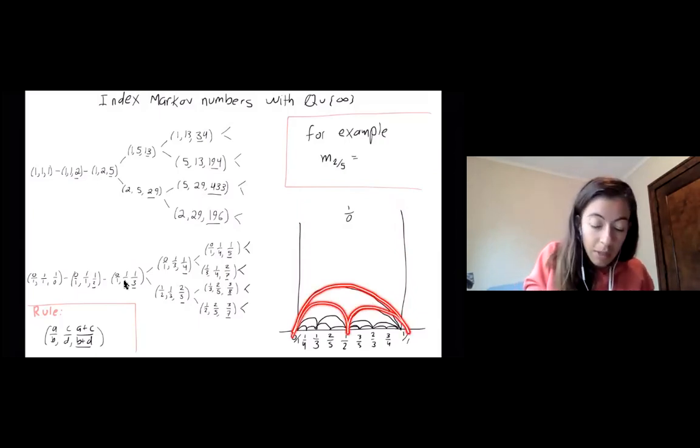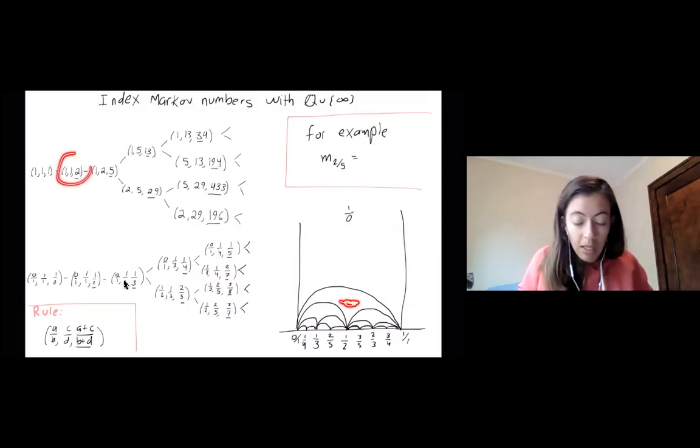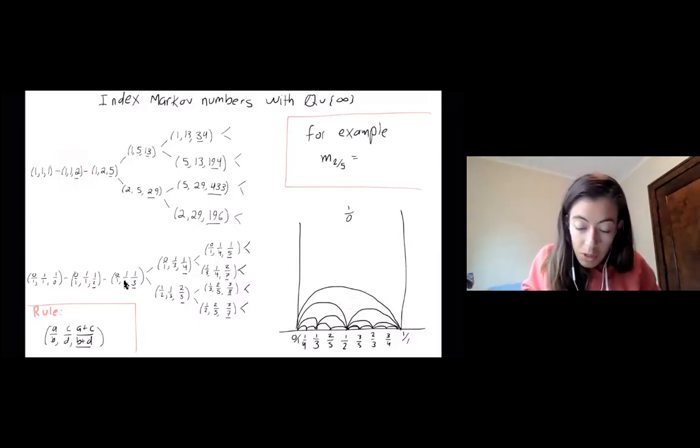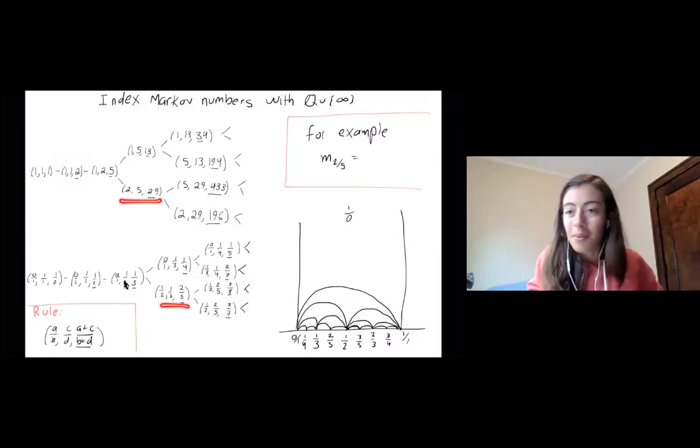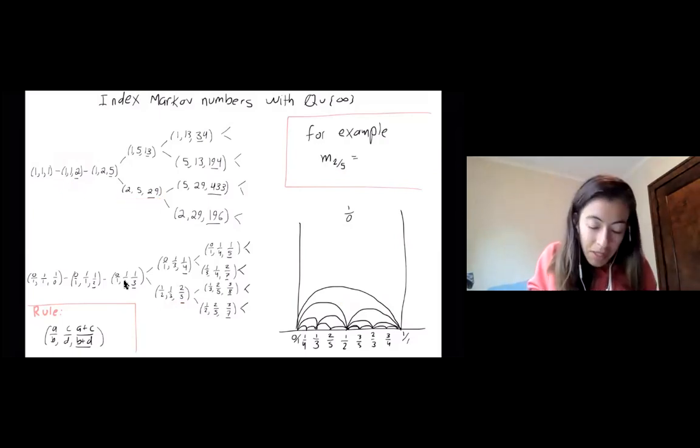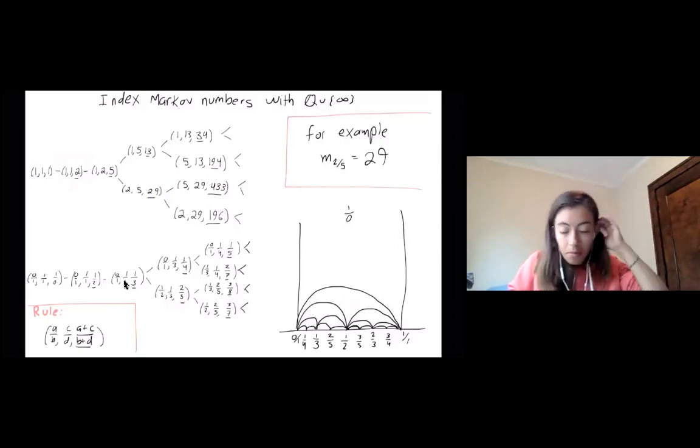So then we can think about each Markov triple corresponding to a certain triangle here. So I suppose this would correspond to just the second one. And then for the individual numbers, one way we can see how to match them up. So for example, M two five. So on the bottom, I'll look at the first time I see two or five. And that's here. And so I see, I go up to that same triple here. It might not be clear why I picked this one, but we'll make it more clear. So then 29 could be our two five.